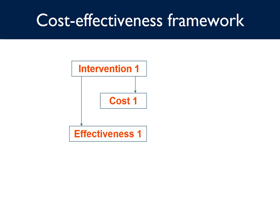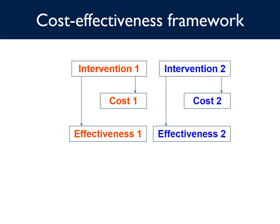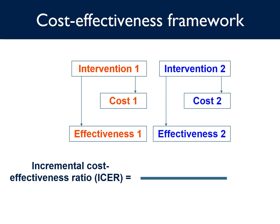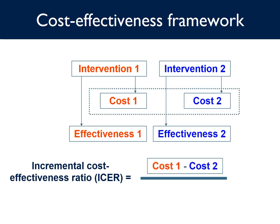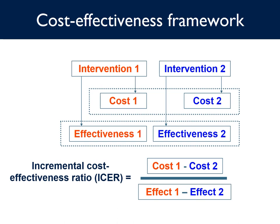How does the cost effectiveness framework work? We have one intervention — here intervention one, which might be the new treatment — and we estimate its costs and its effectiveness per patient. We compare this with intervention two — maybe best current clinical practice, the market leader, or no treatment — and we estimate the costs and effectiveness associated with that intervention. We then estimate an Incremental Cost-Effectiveness Ratio, or ICER, which consists of the difference in costs divided by the difference in effects.